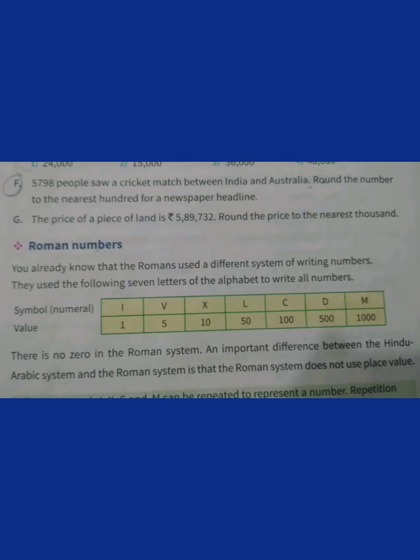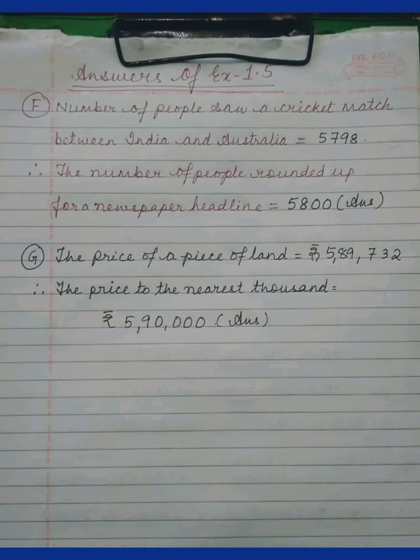Coming to the word sums F and G. Here, nothing extra is to be done. As you do the sums, we have done the previous sums — only a statement is to be added. So, read the question first. Question number F: the number of people who saw a cricket match between India and Australia. If they were 5798, the number has to be rounded up to the hundreds place. So, it is nearer to 5800. Similarly, question number G can also be done.